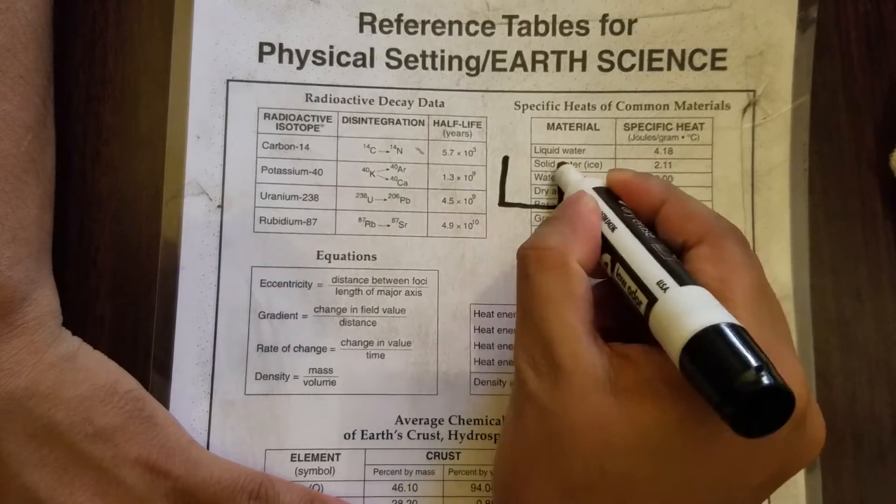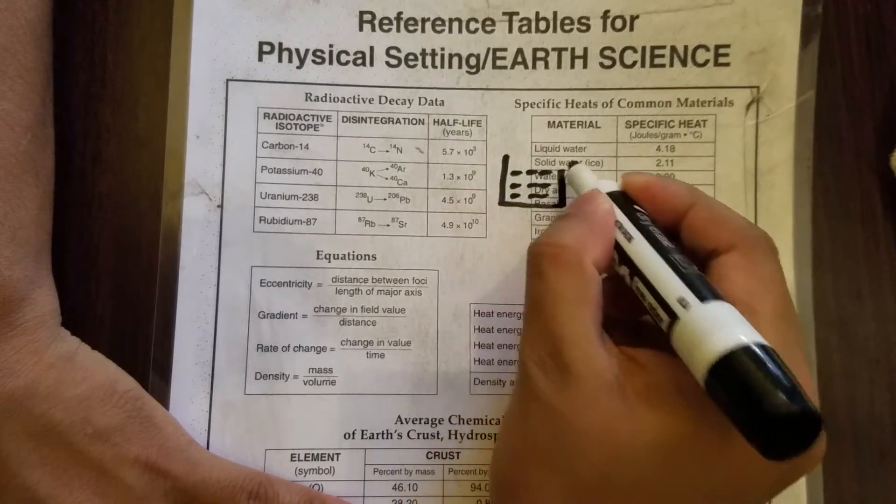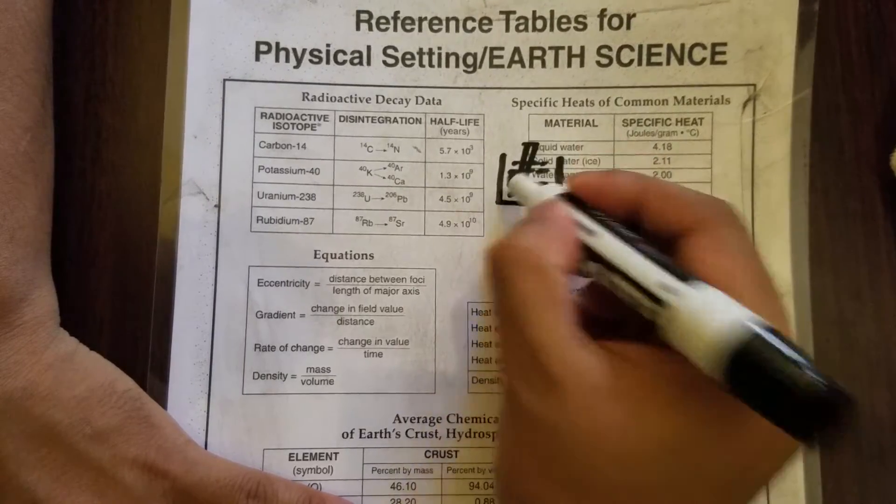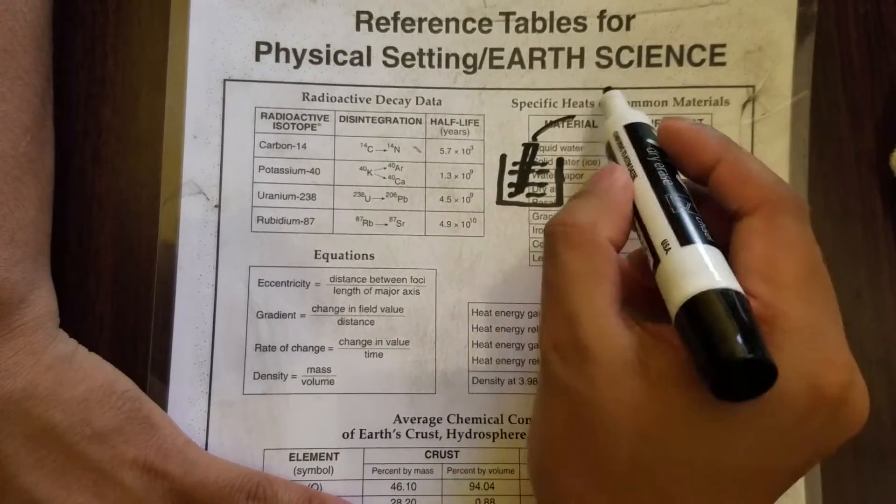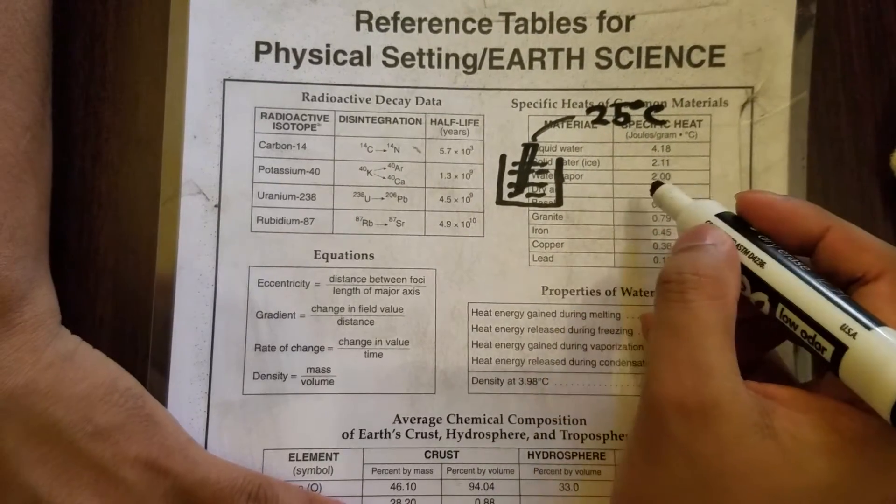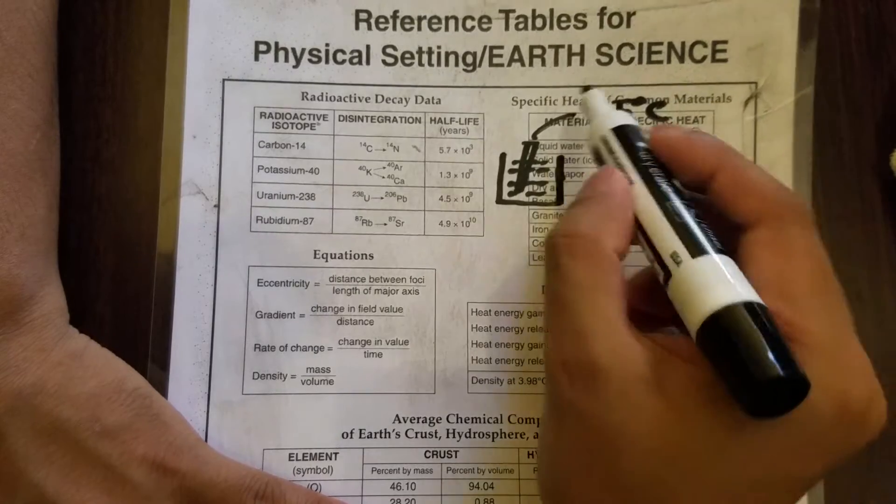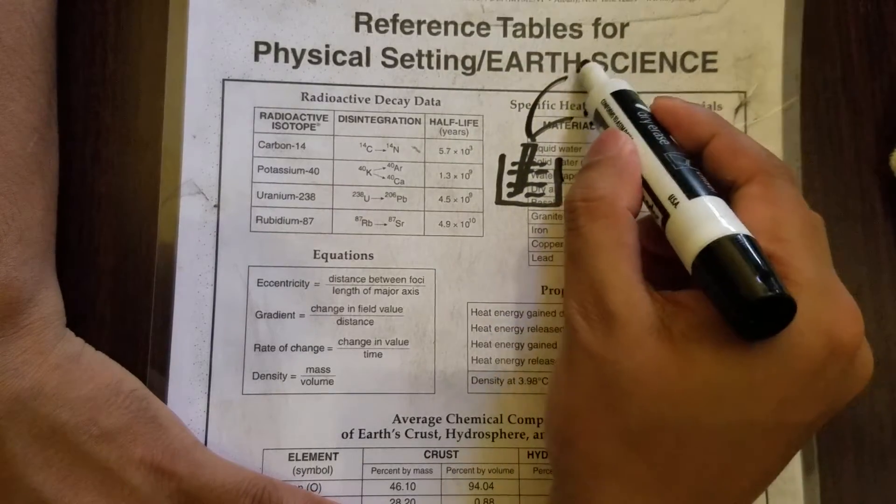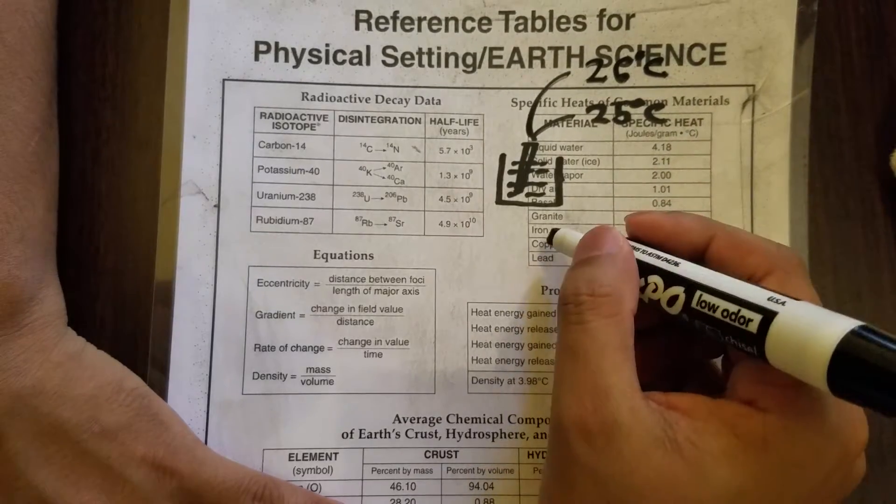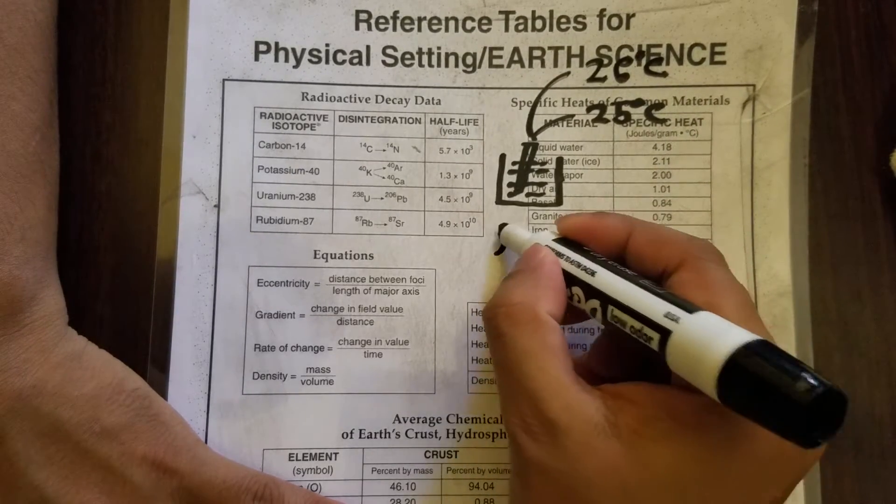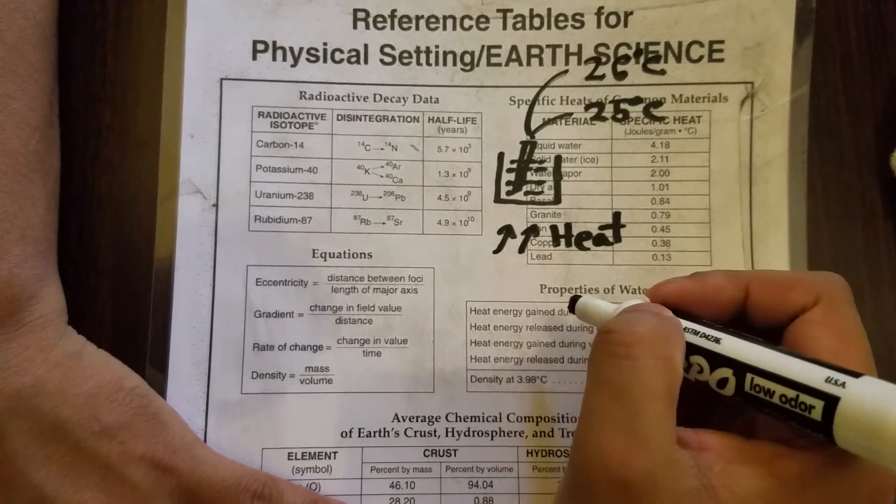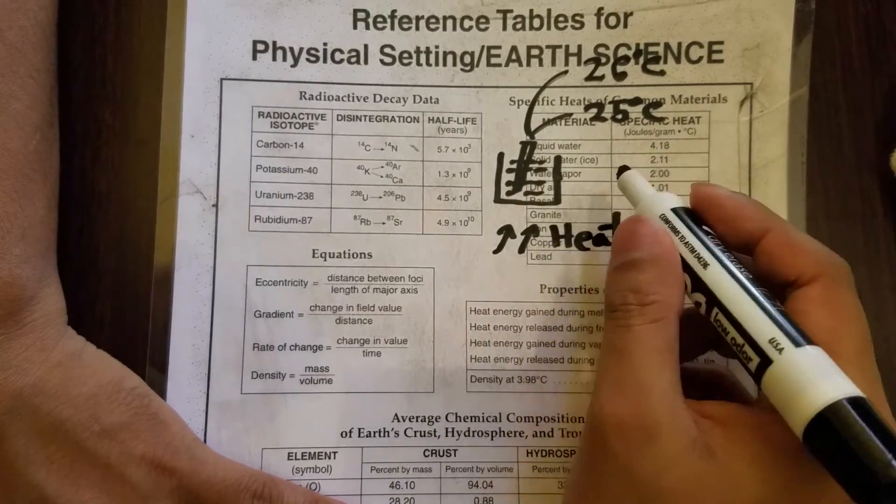So let's say you have water in a beaker. You use a thermometer to check the temperature and you find that the temperature is 25 degrees Celsius. Now you want to raise the temperature to 26 degrees. How can you raise the temperature? Obviously you need to apply heat.